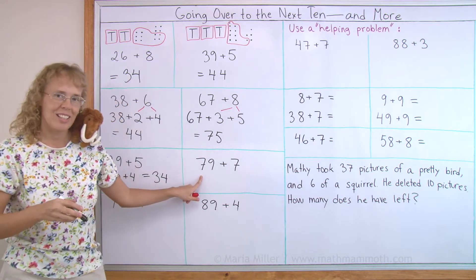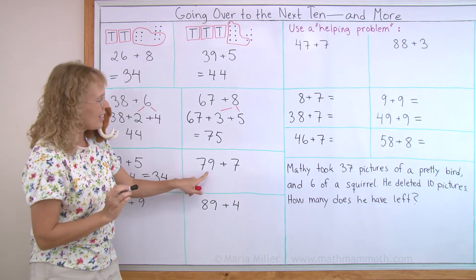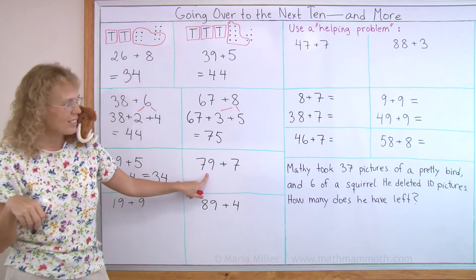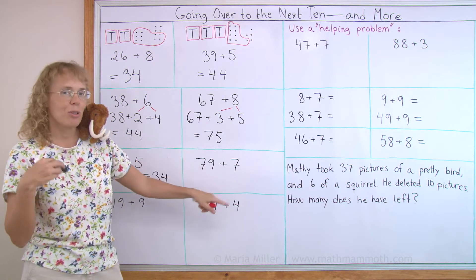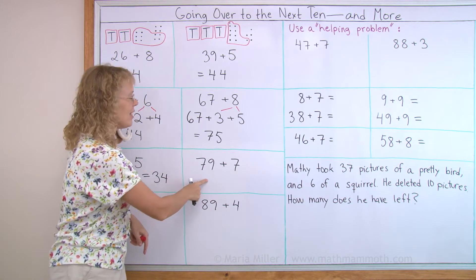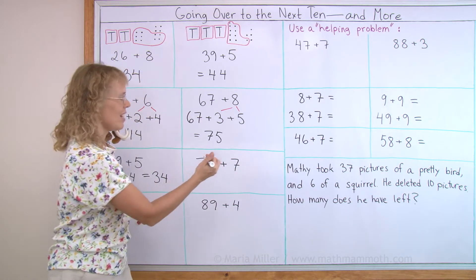Again, 79 plus 7. 79 wants to become 80. And so it gets one dot from 7 and 7 becomes 6. So in total we have 80 and 6, which is 86.